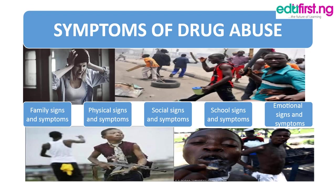What are the symptoms of drug abuse? Number one is family signs and symptoms, and these include exhibiting a lackadaisical attitude towards laws and parents, sneaking to unusual secret places, isolation from family members, and hiding in the room.